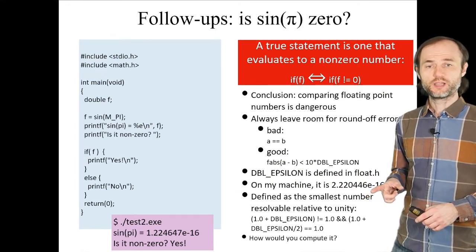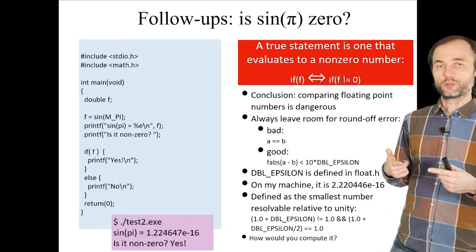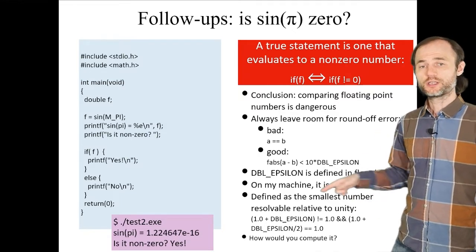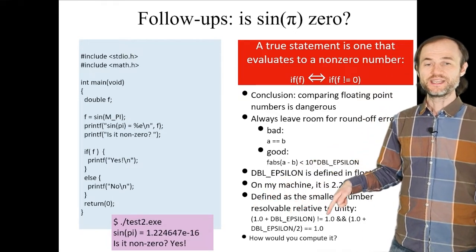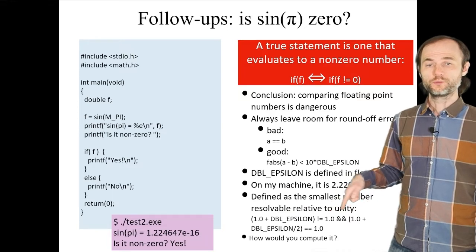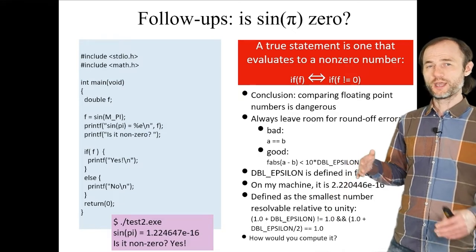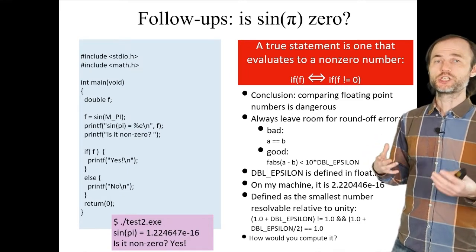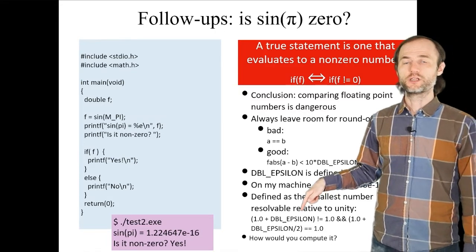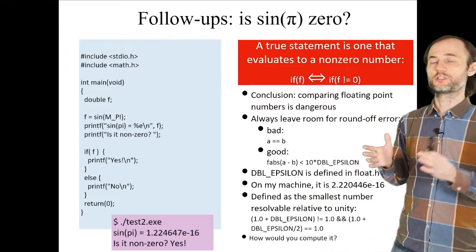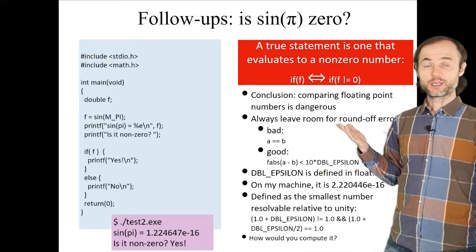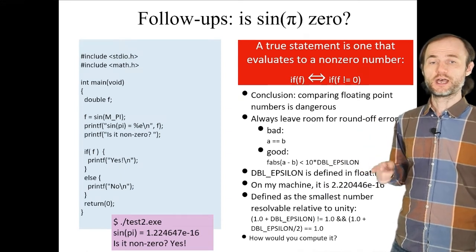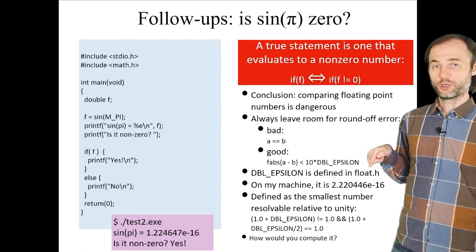DBL_EPSILON is the smallest number resolvable within numerical precision relative to unity. The definition is that 1 plus DBL_EPSILON is not equal to 1, but 1 plus DBL_EPSILON over 2 will equal 1. If you add anything smaller than that number to 1, you get 1 back — the machine cannot tell the two numbers apart. A quick exercise: how would you compute DBL_EPSILON if you didn't have access to float.h?